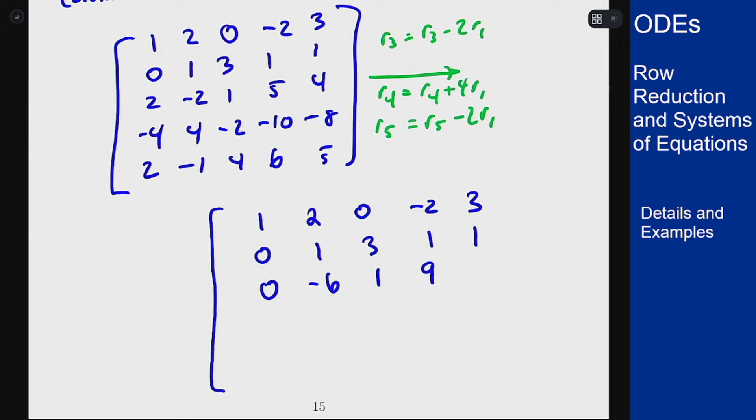And then 4 minus 6 is negative 2. For the fourth row we're adding 4 copies of row 1. We'll get a 0 as expected in that first spot. 4 plus 8 is 12.